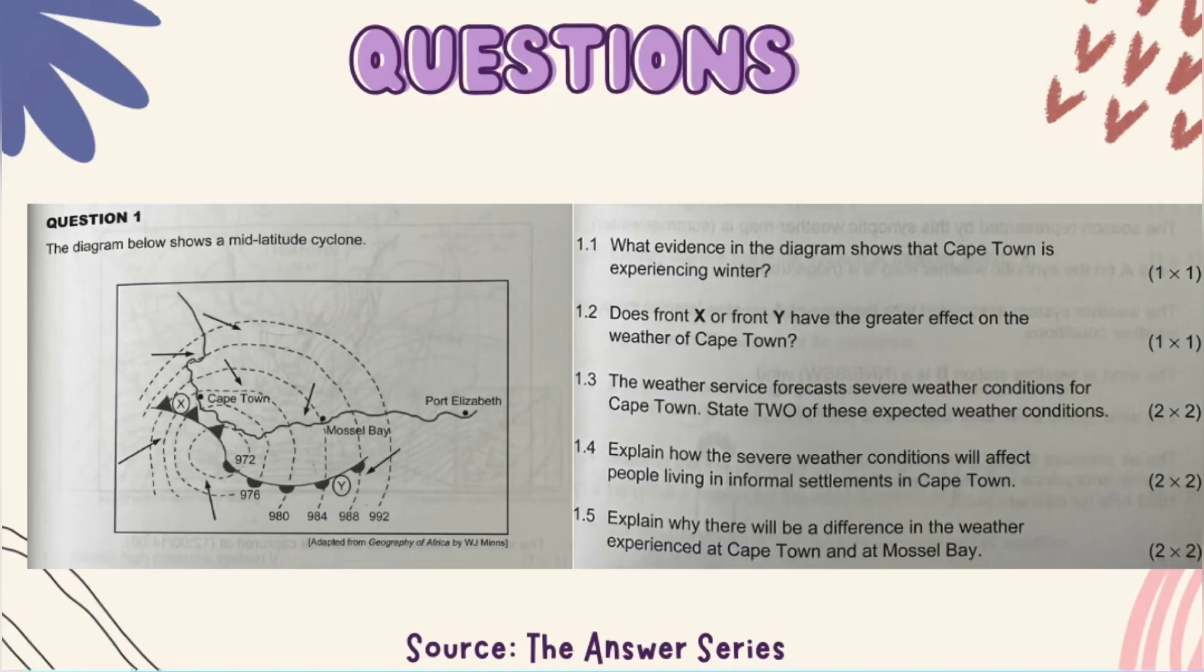Question 1.1: What evidence in the diagram shows that Cape Town is experiencing winter? It's the mid-latitude cyclone. Mid-latitude cyclones occur during winter in South Africa, so that's how you know that it's winter. They did not show you air temperature or any other factors, so it's merely the presence of the mid-latitude cyclone.